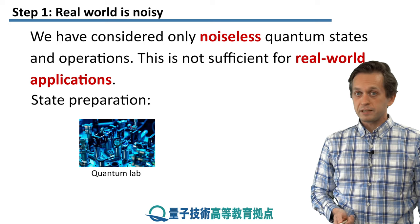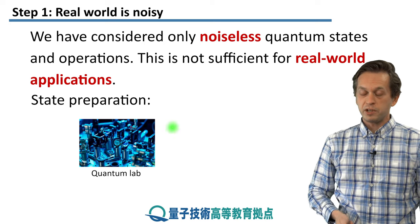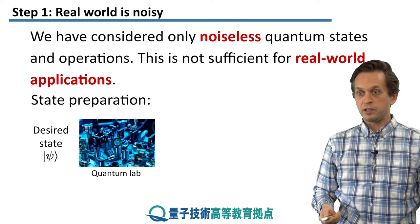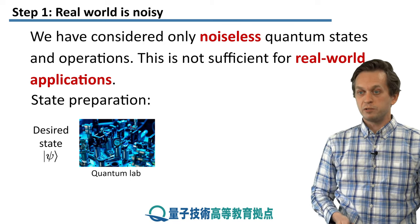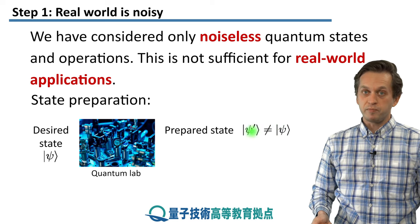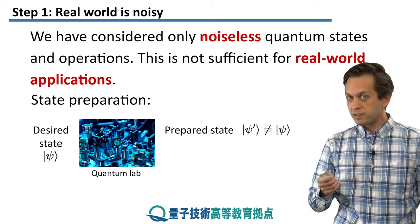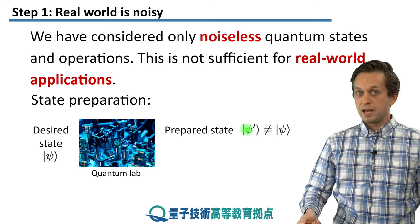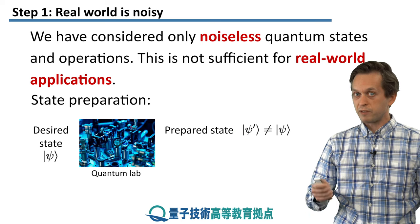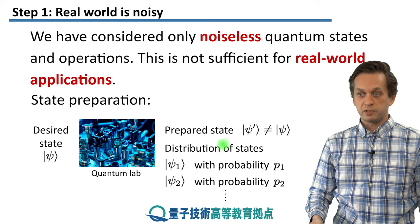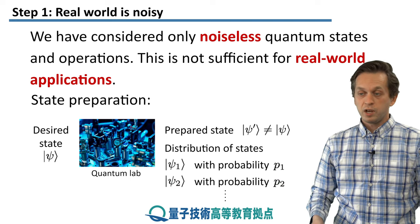We can, for example, consider state preparation. You may go to your friend who works in a quantum laboratory and ask him or her to prepare some state psi. We have some state that we desire to create, so we try to do our best. But what happens in a real lab is that the prepared state is not the desired state psi — it's some other state psi prime, if you are lucky. Most of the time, we have imperfect knowledge of the state. Usually what happens is that our friend in the laboratory prepares some distribution of states: a ket psi 1 with some probability p1, a ket psi 2 with another probability p2, and so on.